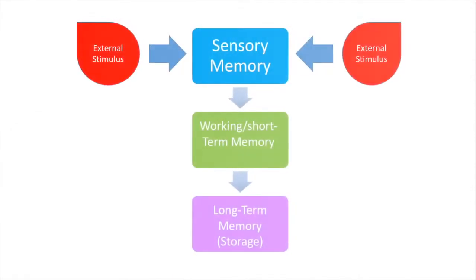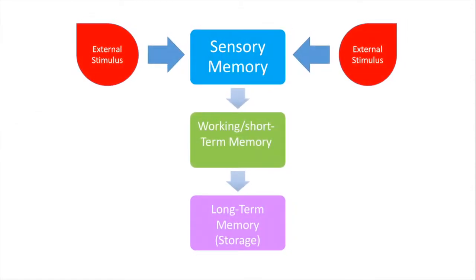To explain how long-term memory works, we must first get a better understanding of how we form memory. This is a basic model of memory. After you receive a stimulus, your brain begins to process that information.